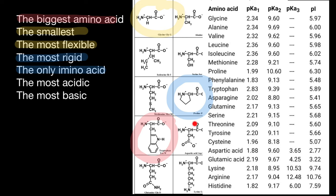Take a look at the table. For example, aspartic acid has a negative charge and lysine has a positive charge. The last column is the pI, or isoelectric point — the pH of the solution at which a certain amino acid is going to have a net zero charge. It can be positive on one side and negative on the other, but the net charge is zero.